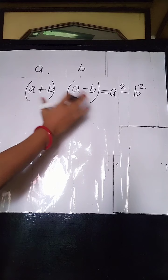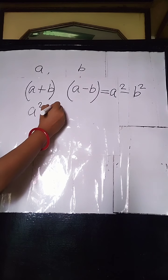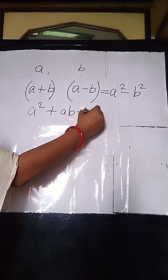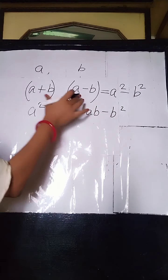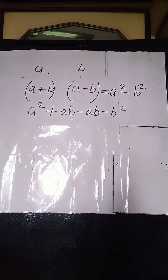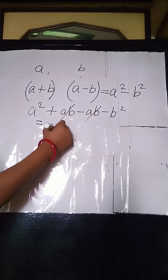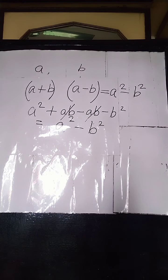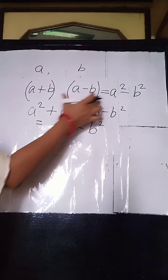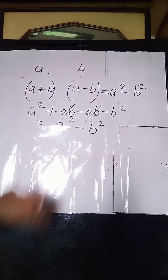Now, if you ask for the derivation — how we are getting this — simply multiply A plus B into A minus B. You get A square plus AB minus AB minus B square. By cancelling plus AB and minus AB, the only remaining thing is A square minus B square. So you can see how A square minus B square is derived from A plus B into A minus B.